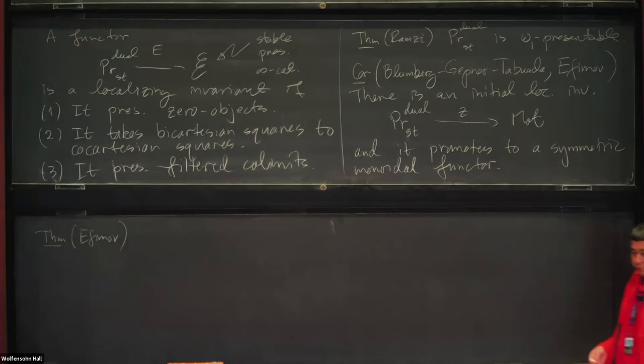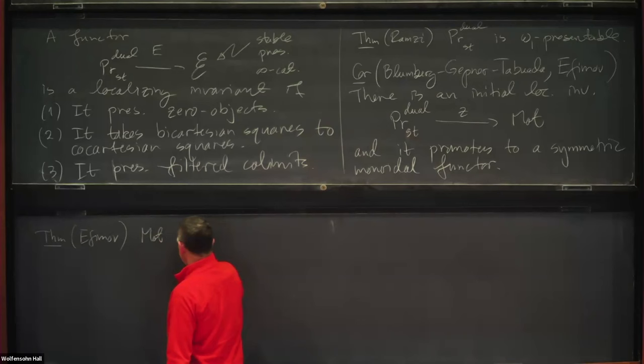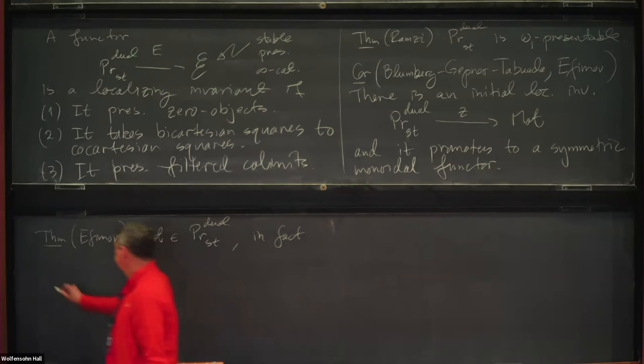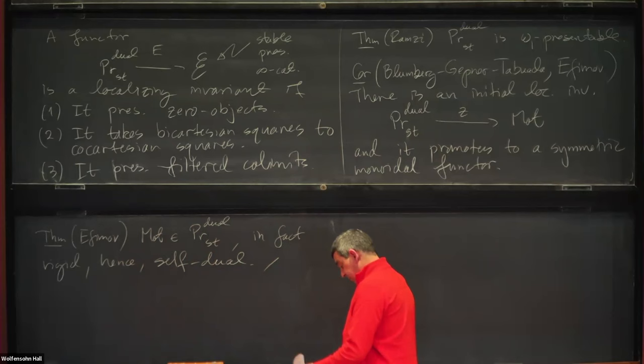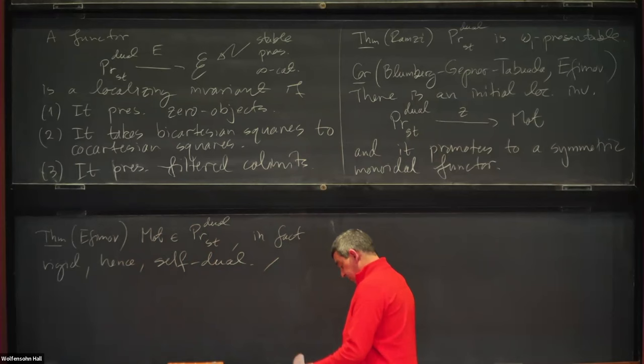So I should say this category of non-commutative motives is what conceive it's introduced. But this now gives a much better understanding of it. So I think it's very realistic, and Ifimov has proved the fantastic theorem that this is itself dualizable. In fact, it's rigid. So it's not only dualizable, but it's self-dual.